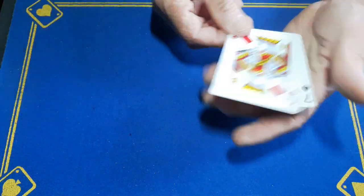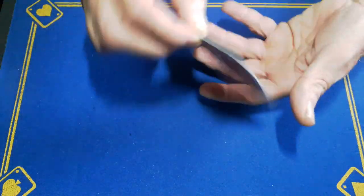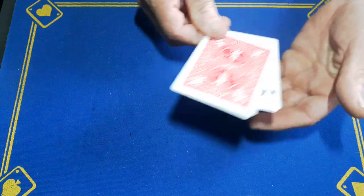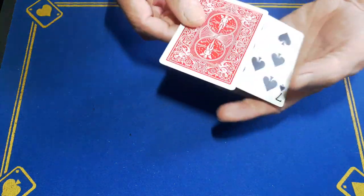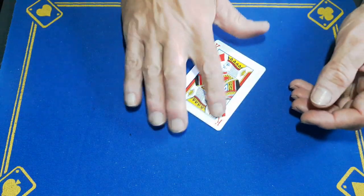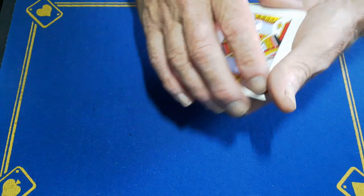All right, let me just show you something with these two cards. A red seven and a blue king. We're going to give them a little wave and a spread, and now we've got a blue seven and a red king.